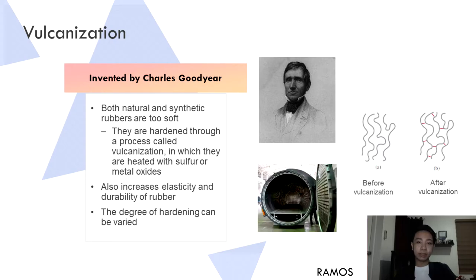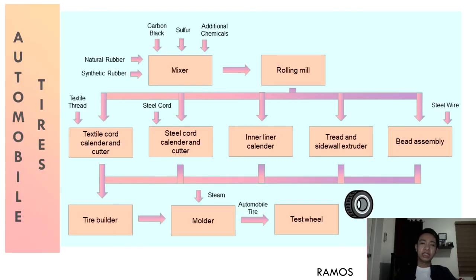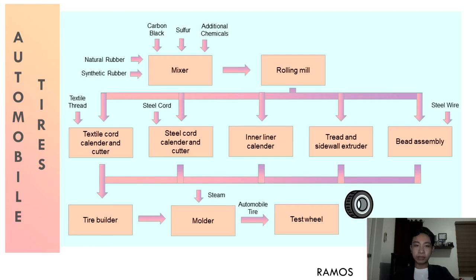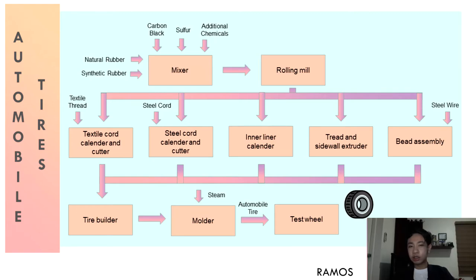The first step in the production of automobile tires is the mixing of raw materials. Both natural and synthetic rubber are used — natural rubber is the main component of the tread layers, while synthetic rubbers such as butadiene and styrene butadiene rubber are used for parts of the treads. As many as 20 different types of rubber may be used in tire manufacturing. Carbon black is added as a reinforcing agent to improve durability, and sulfur is used for the vulcanization process.